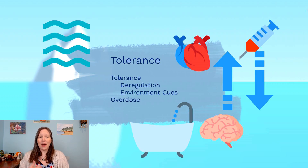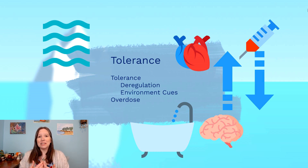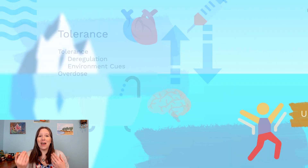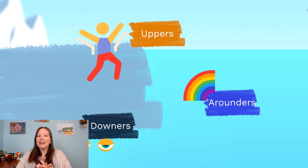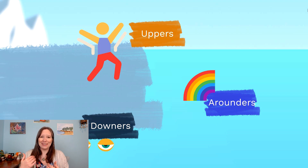Now that we've talked about the basics of how endogenous and exogenous chemicals interact, let's talk about some specific examples of exogenous chemicals. We'll start off by categorizing them as uppers, downers, and all-rounders — but as you're going to see, it's a lot more complicated. Keep in mind, this is just an introductory course; we do have advanced courses on drugs and behavior.